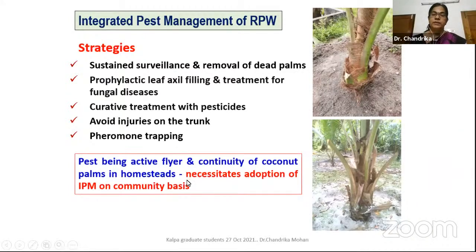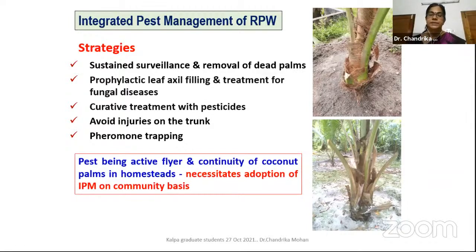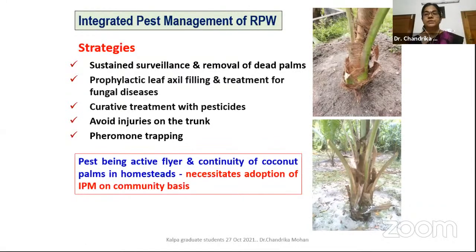Pheromone trapping is also recommended. Pests are very active flyers and the continuity of coconut plantations in Kerala and most coconut-growing areas necessitates adoption of IPM on a community basis. Single farmer activity may not suppress the pest to a desirable level.